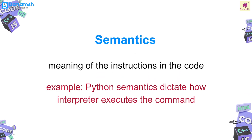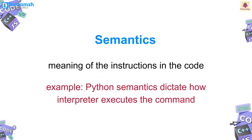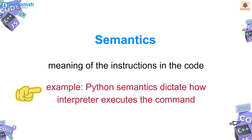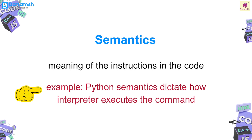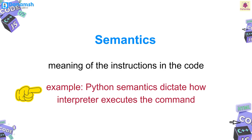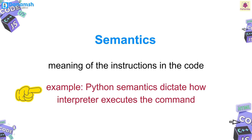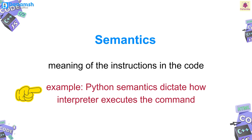Semantics refers to the meaning of the instructions in the code. For example, Python semantics dictates how the interpreter executes the command, ensuring each piece of the code performs its intended function.